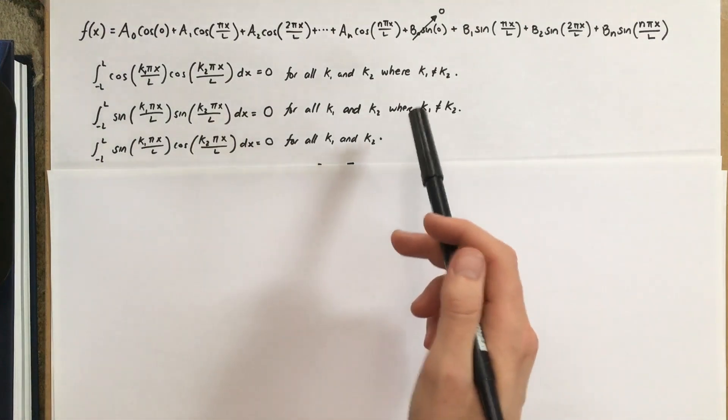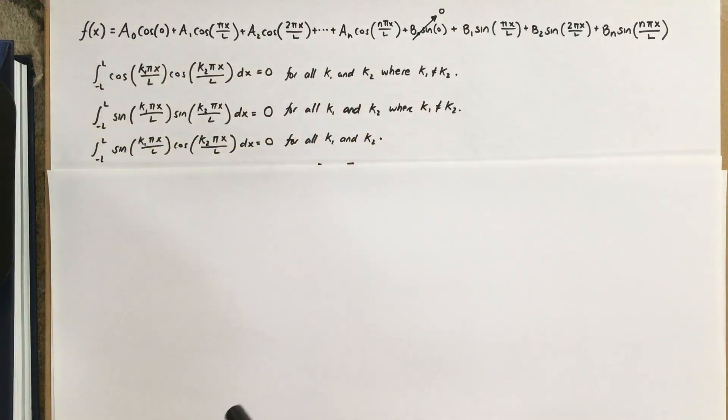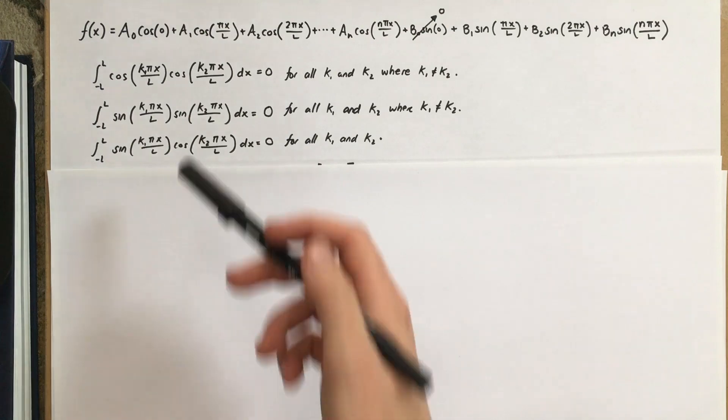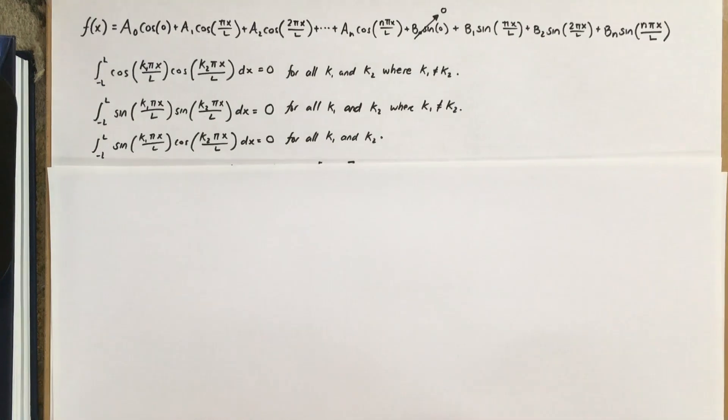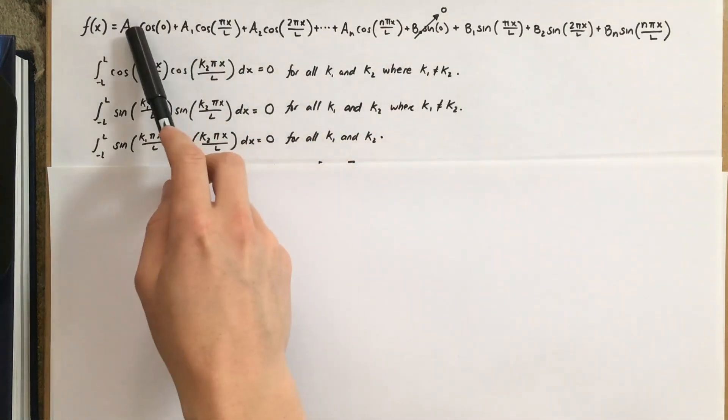So, these integrals show that these are all orthogonal to each other. And we could show the rigorous integration, but we don't have time. But feel free to do it on your own time if you'd like. Alright, so we've shown that these trig functions are all orthogonal to each other, all 2n plus 1 of them.